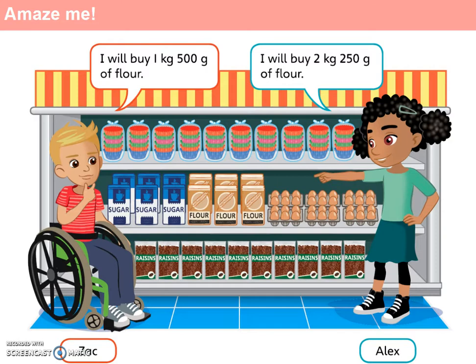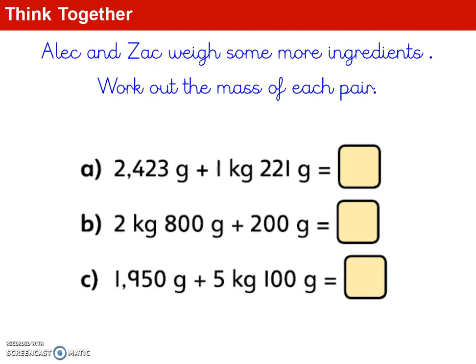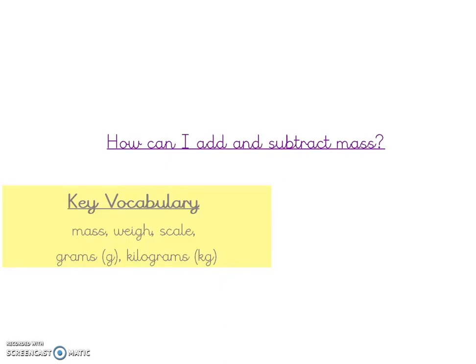Now we're ready to move on to the rest of our textbook before the independent work. For our first think-together question, Alex and Zach weigh some more ingredients and we've got to work out the mass of each pair. Remembering the strategies we've used: represent the problem as a bar model, convert units so they're the same — kilograms and grams to grams — then use the column method for addition and a number line to find the difference for subtraction problems.